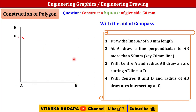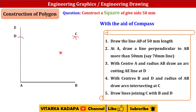With B and D as centers and radius AB, cut arcs in the open space — one arc from B and one from D — and their intersection gives point C. Now join the lines from C to D and C to B, which completes our square ABCD.